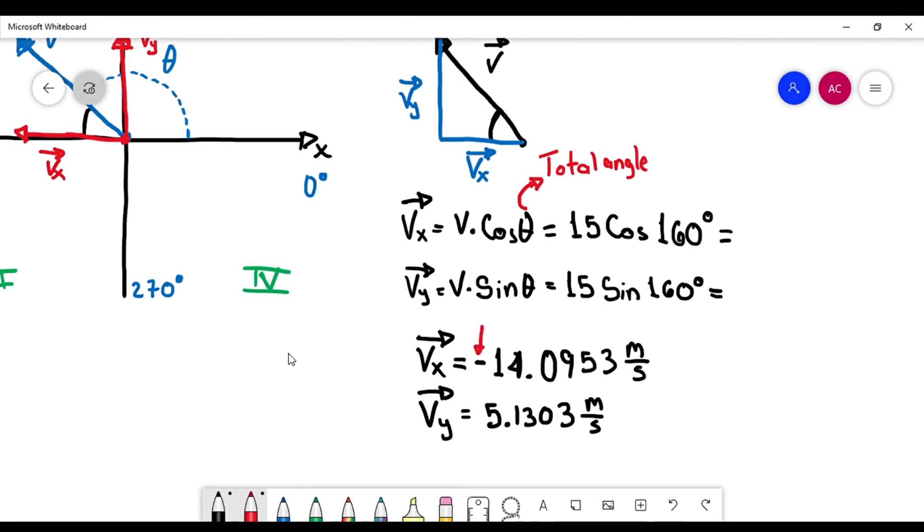So if you see this is negative. Okay, so the direction in this case means this: If Vx is positive, that means that the vector goes to the right, or Vx goes to the right. If it's negative, so that means Vx goes to the left.